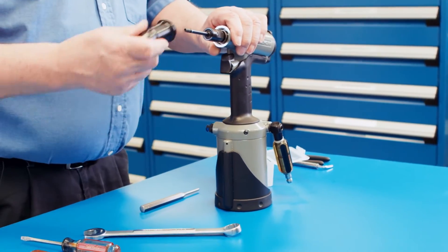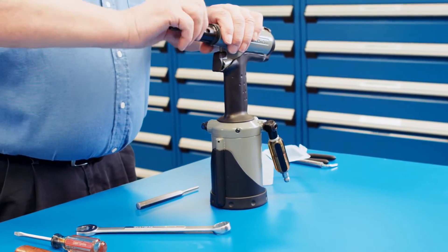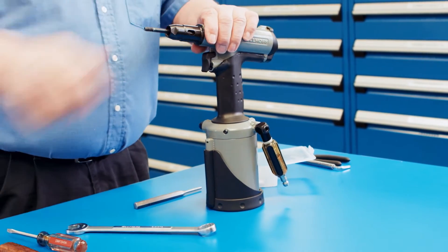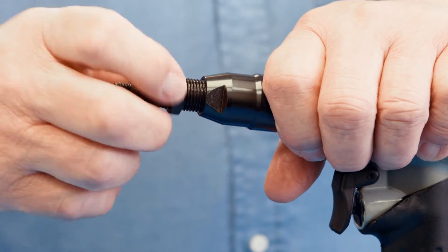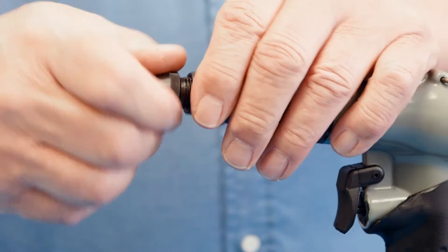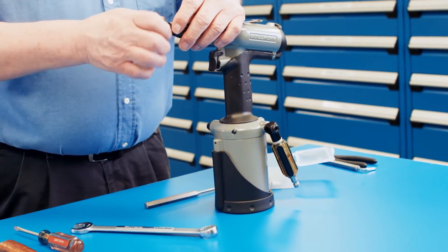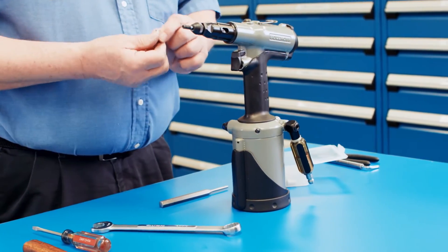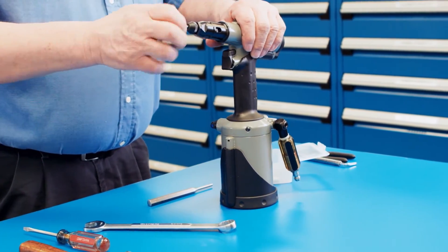Next, install the nose piece, followed by the anvil. When installing and adjusting the anvil, make sure the end of the mandrel is flush with the fastener you are using.